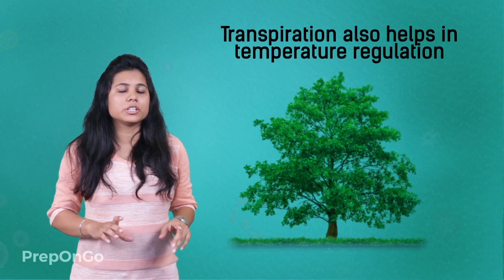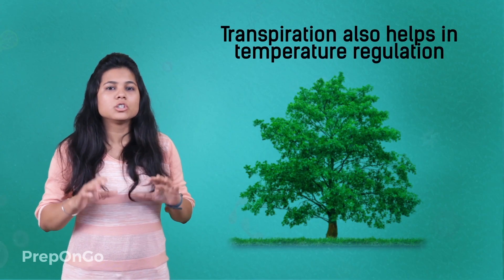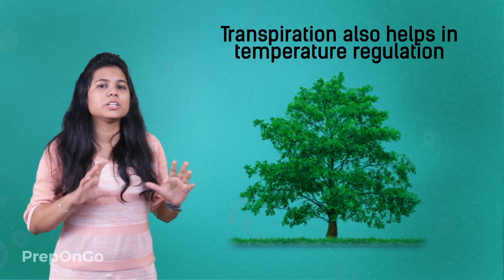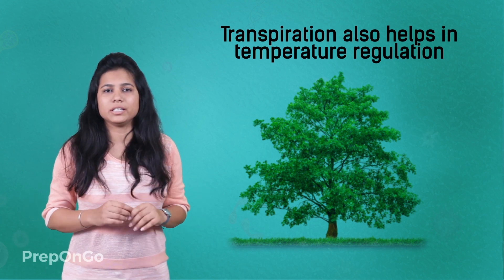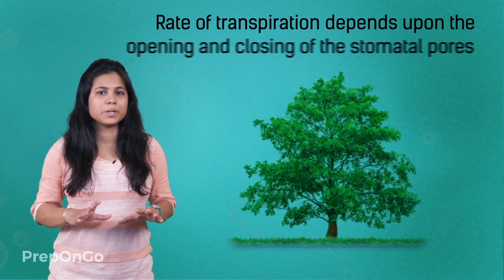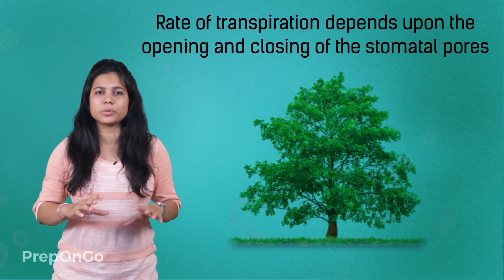The transpiration process helps transport water from the roots to the highest point of the plant. Transpiration also helps in temperature regulation. The rate of transpiration depends upon the opening and closing of the stomatal pores, and transpiration and photosynthesis work simultaneously.